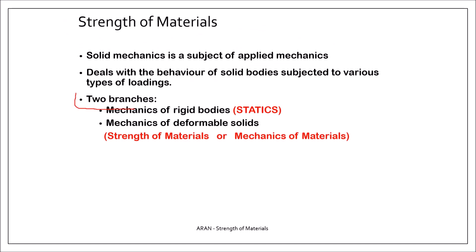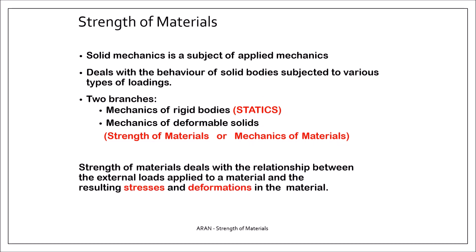Solid mechanics has actually two branches. The first one is statics. In statics we deal with rigid bodies and we do not consider the deformation of the material. In strength of materials, which is the second branch — and it is sometimes also called mechanics of materials — we take our bodies as deformable solids and we also consider the behavior of the material. In summary, strength of materials deals with the relationship between the external loads applied to a material and the resulting stresses and deformations in that material.